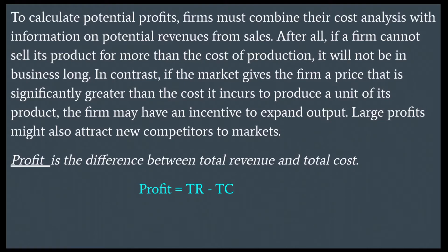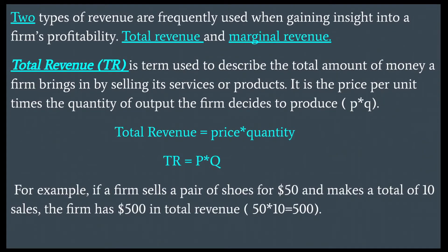Profit is the difference between total revenue and total cost. Two types of revenue are frequently used when gaining insight into a firm's profitability: total revenue and marginal revenue. Total revenue, or TR, is the term used to describe the total amount of money a firm brings in by selling its services or products. It is the price per unit times the quantity of output the firm decides to produce — price times quantity.